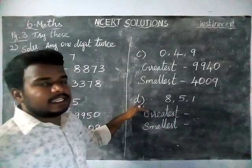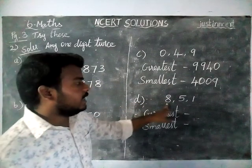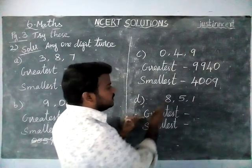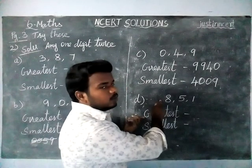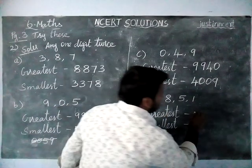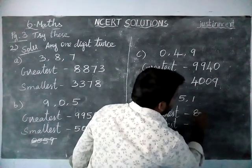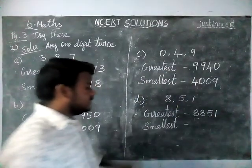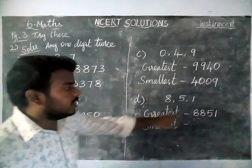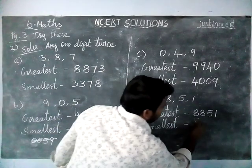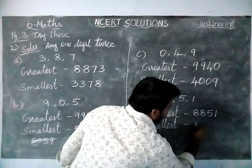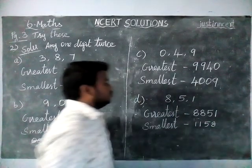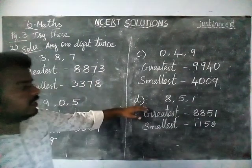Next, option D: digits 8, 5, 1. The greatest digit is 8, so we use 8 two times: 8, 8, 5, 1. For the smallest number, the smallest digit is 1, so we use 1 two times: 1, 1, 5, 8. By using the given digits, greatest number is 8,851 and smallest number is 1,158.